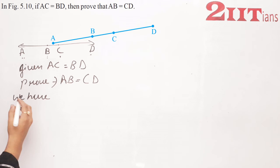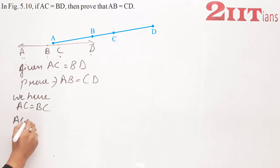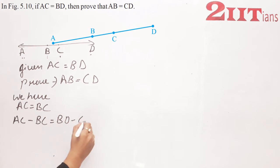We have AC equals to BC. AC BC के बराबर है, यह हमारे पास पहले से ही given है. अब AC minus BC equals to BD minus BC.